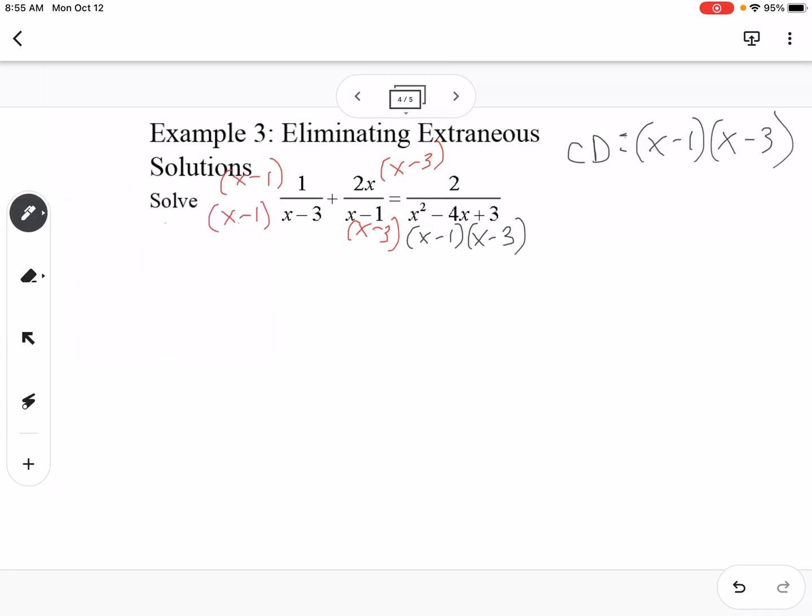So now at this point, we have all three parts of our equation with the same denominator. So I can go ahead and cross it off. And then I'm going to distribute. So 1 distributed doesn't change anything. So this would be x minus 1 plus, I'm going to distribute the 2x. So this would become 2x squared minus 6x equals 2 because we didn't have to multiply that side of the equation by anything because it had both parts of the common denominator.